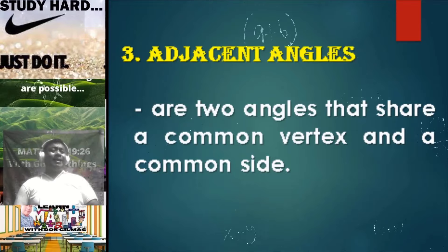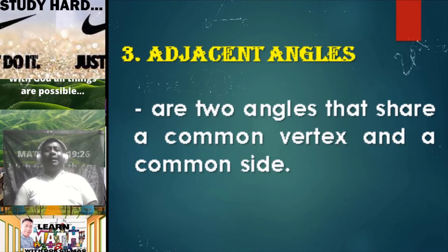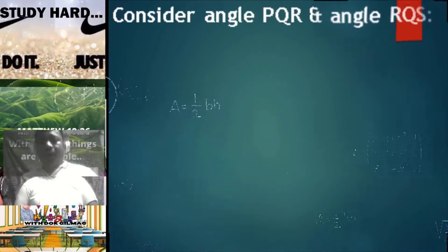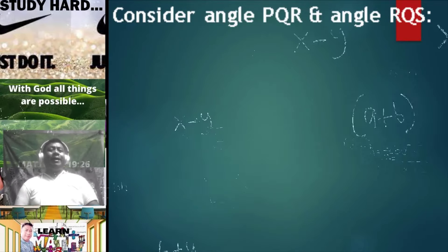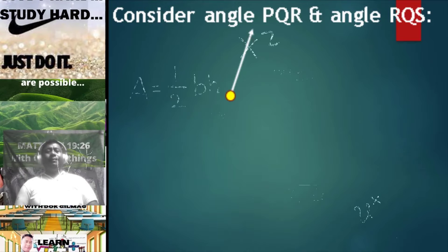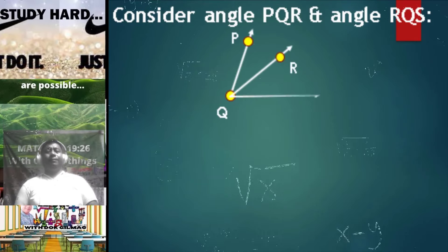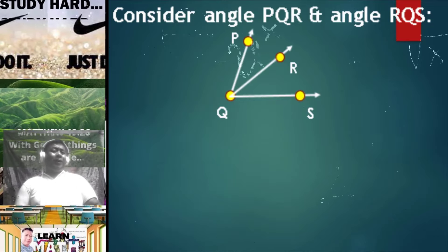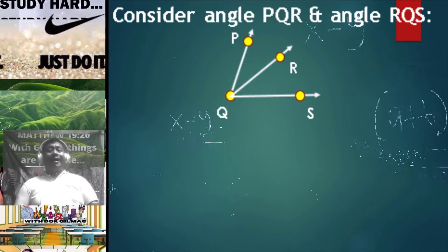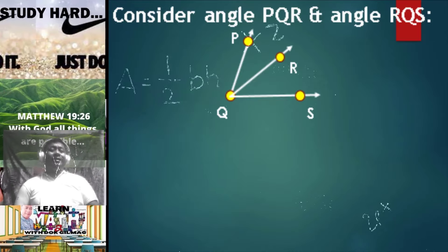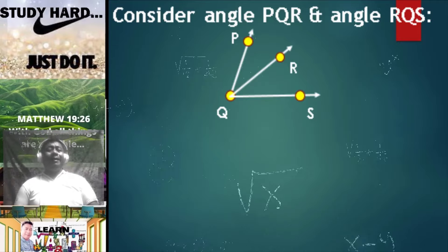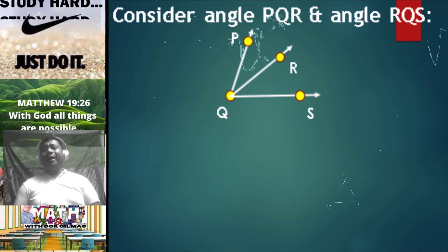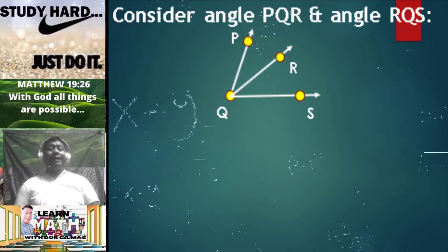Consider number three: adjacent angles. When we talk about adjacent angles, these are two angles that share a common vertex and a common side. Consider angle PQR and angle RQS. As you can see, these two angles share a common vertex and a common side. Therefore, we can say that angle PQR and angle RQS are adjacent angles.